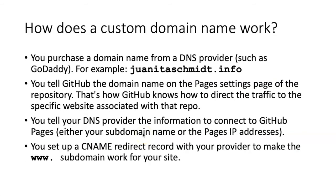It's a little bit complicated but there are explicit directions on a linked page that will walk you through it. The overall idea is this: you buy a domain name from a DNS provider, whatever domain name you're able to get, and then in GitHub on the pages setting page of the repository you enter the custom domain name that you want to use. That is how GitHub knows how to interpret the incoming traffic.